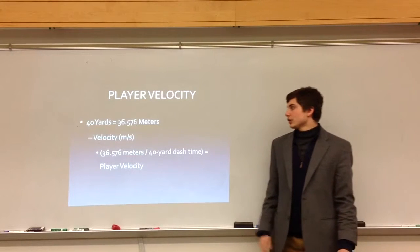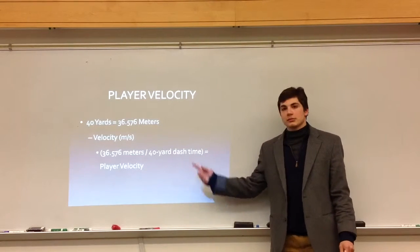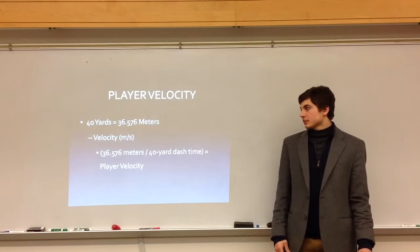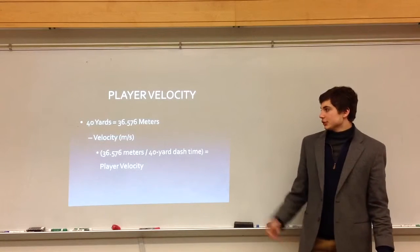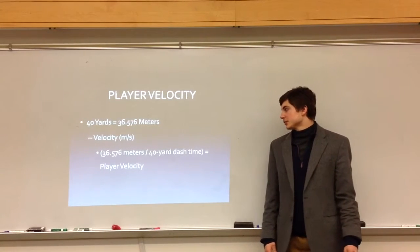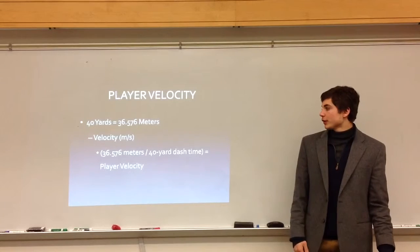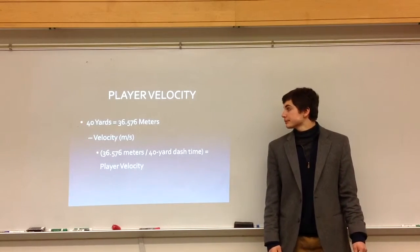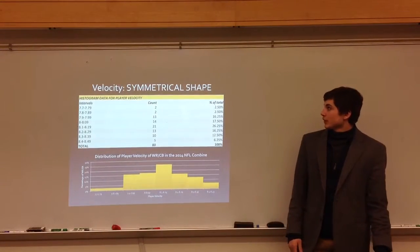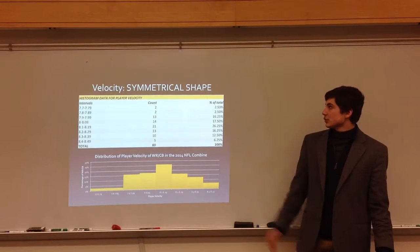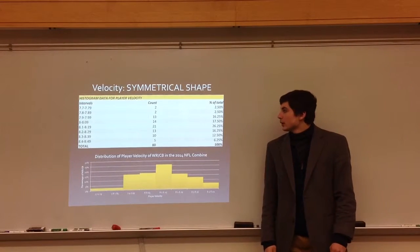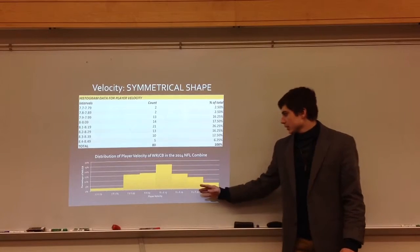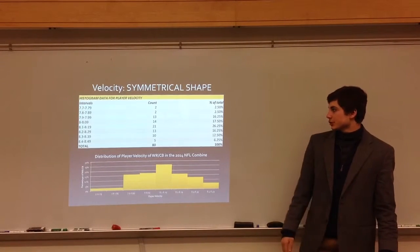For player velocity, I had to convert yards to meters. I took the velocity in meters per second — just about 37 meters divided by the 40-yard dash time — to get the velocity. If you look at the velocity distribution, it shows a symmetrical shape. You can see the peak right here; it comes down nicely, and the other side is symmetrical with it.